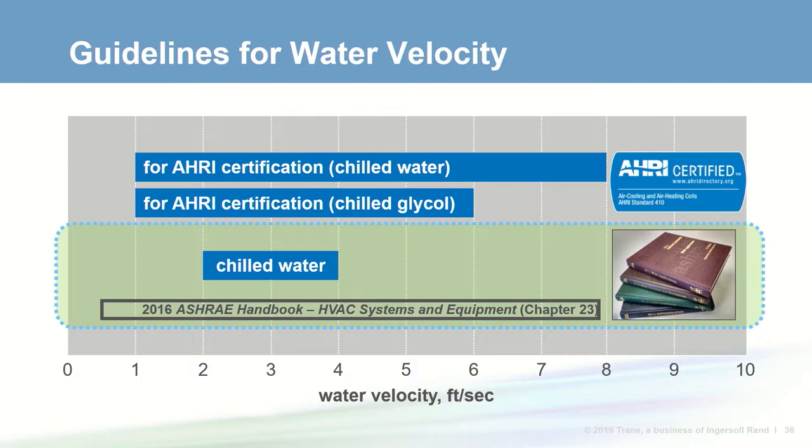The ASHRAE handbook suggests cooling coils are best selected with water velocities between 2 and 4 feet per second, providing a good balance between coil size and minimizing air and water pressure drops. Water velocity is also a key factor for flow turbulence — along with fluid density, viscosity, and tube diameter. As turbulence of the moving fluid increases, so does its ability to transfer heat. Some in the HVAC industry have expressed concern that coil heat transfer will deteriorate if the Reynolds number falls into the laminar flow region.